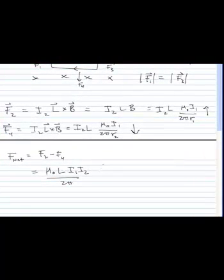The net force is going to be F2 minus F4. I believe it's mu naught L I1 I2 over 2 pi times 1 over R1 minus 1 over R2. And it's going to be in the upward direction.